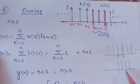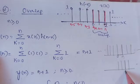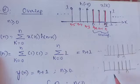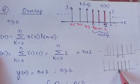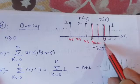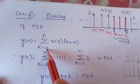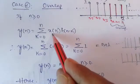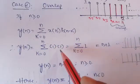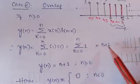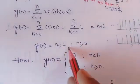With the first signal as-is and the second signal placed so limits become 0 to n, instead of writing -∞ to +∞ we write the summation from k = 0 to n of X(k)·H(n-k). Since X(k) has amplitude 1 and H(n-k) also has amplitude 1, the summation equals summing 1 from 0 to n, giving n+1.